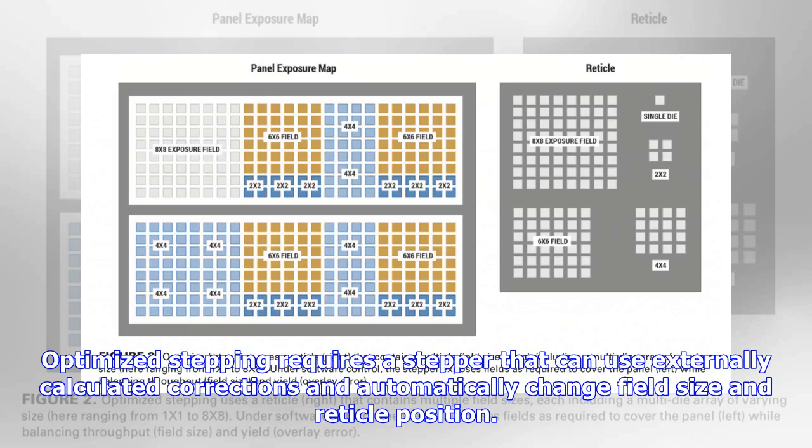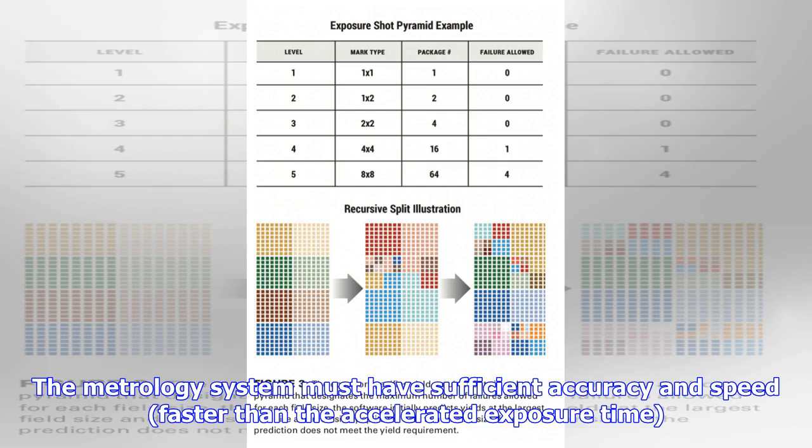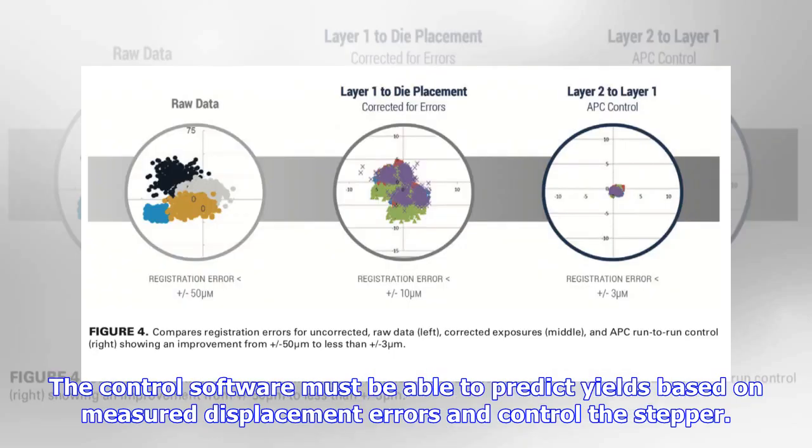Optimized stepping requires a stepper that can use externally calculated corrections and automatically change field size and reticle position. The metrology system must have sufficient accuracy and speed, faster than the accelerated exposure time. The control software must be able to predict yields based on measured displacement errors and control the stepper.